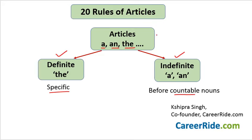In exams, examiners are not only interested in your concepts — they want to know whether you are able to apply those concepts. That is why in this video we are going to learn 20 rules of English grammar articles so that you are able to identify what the examiner is trying to ask and implement the concepts you know. Just knowing is not the purpose; the purpose is to be able to apply what we know.